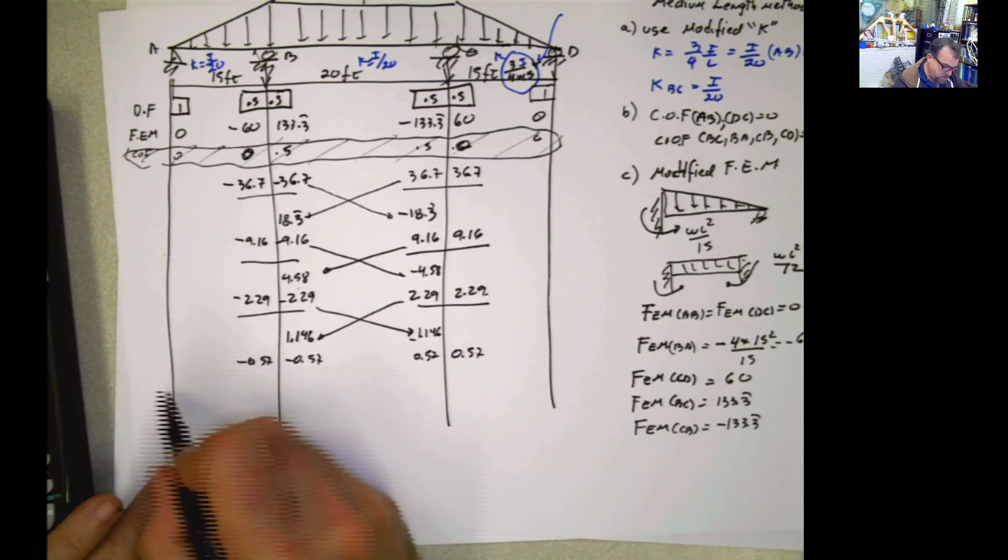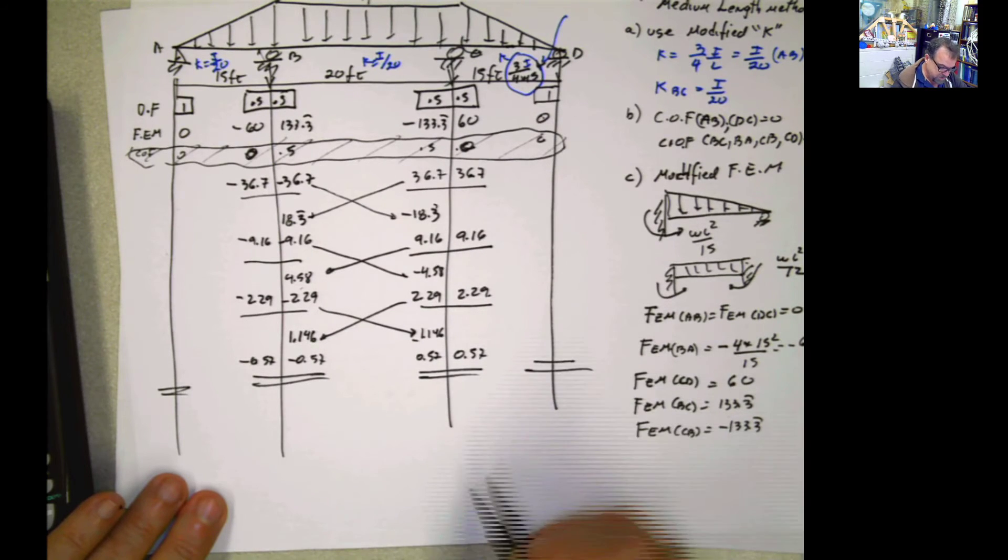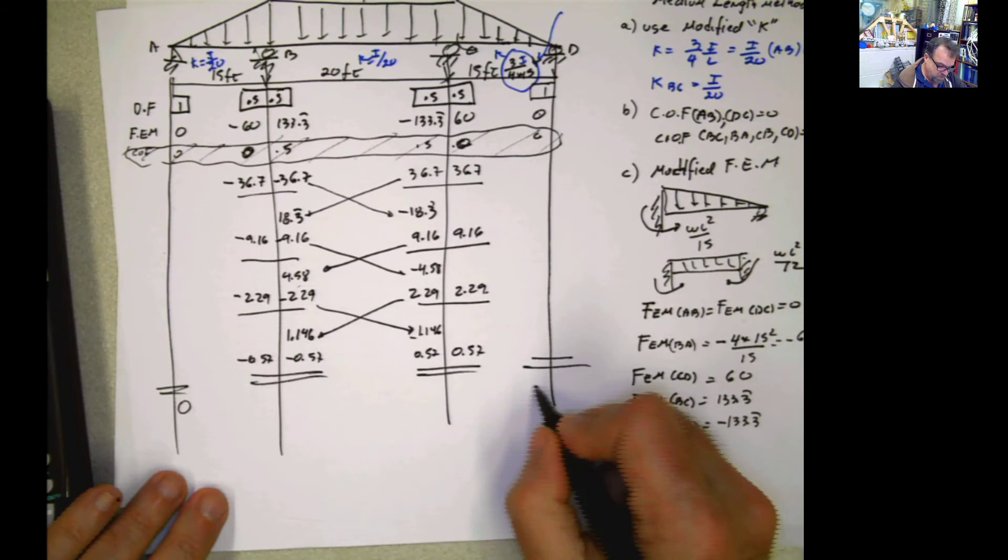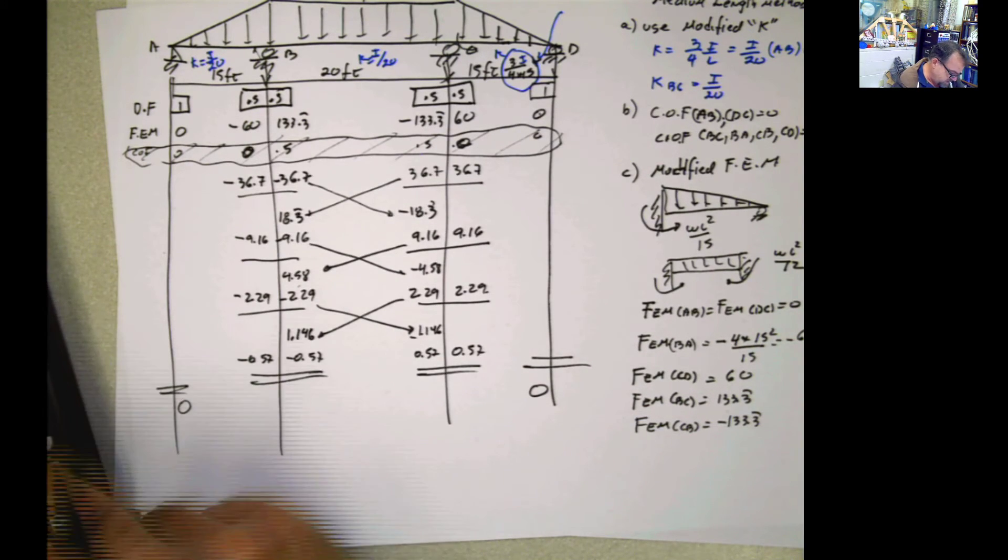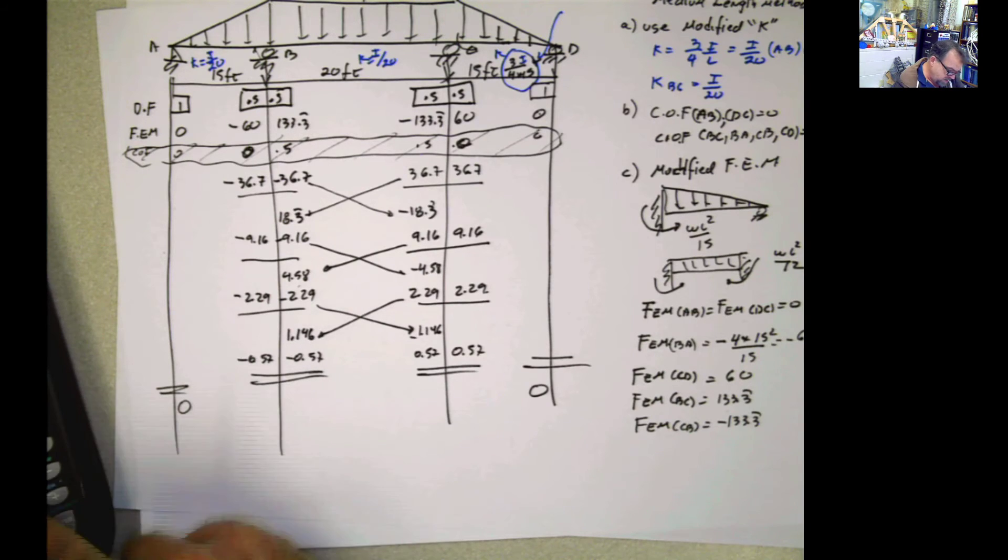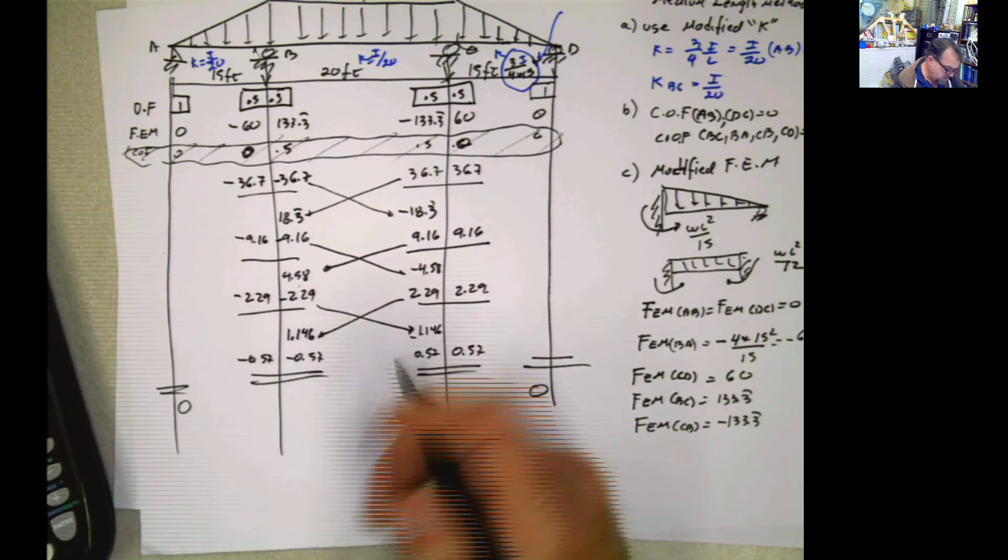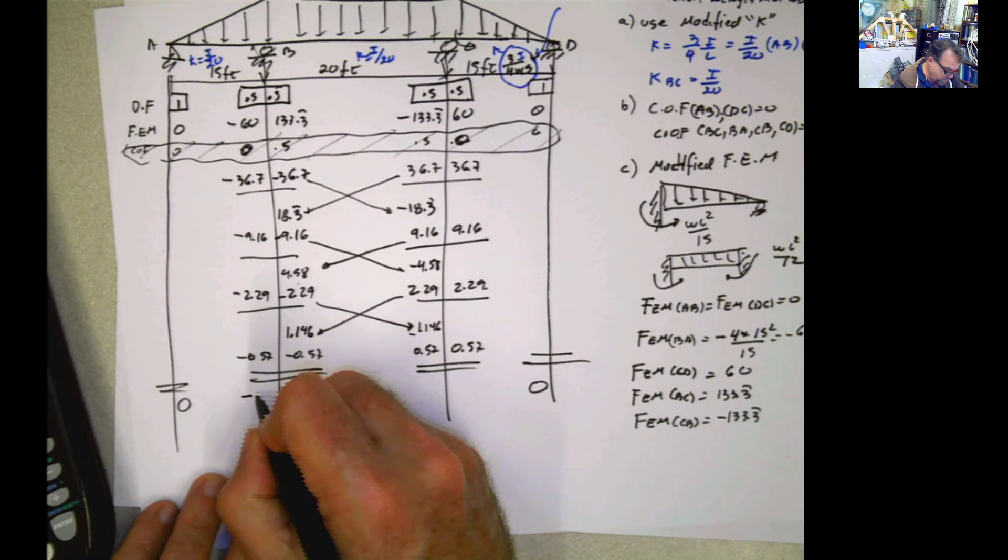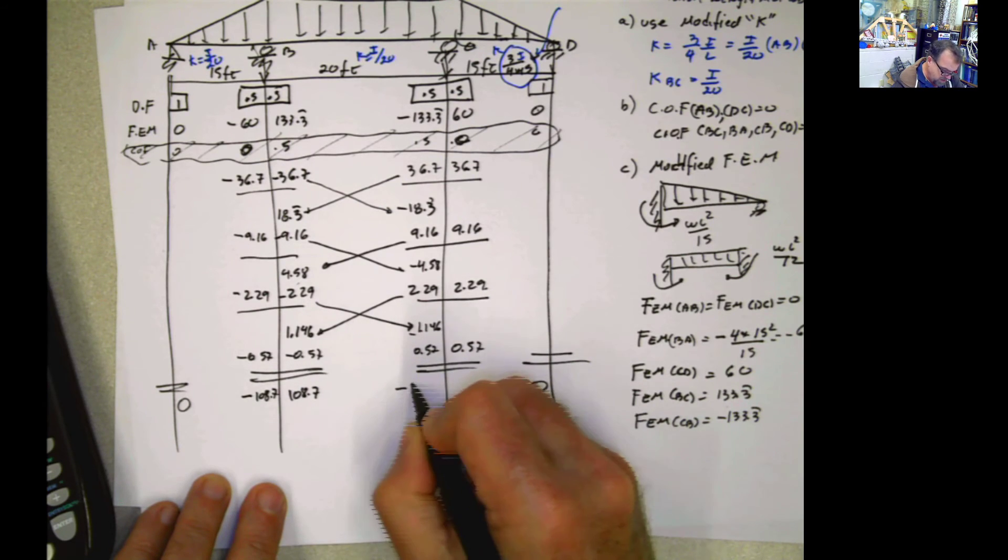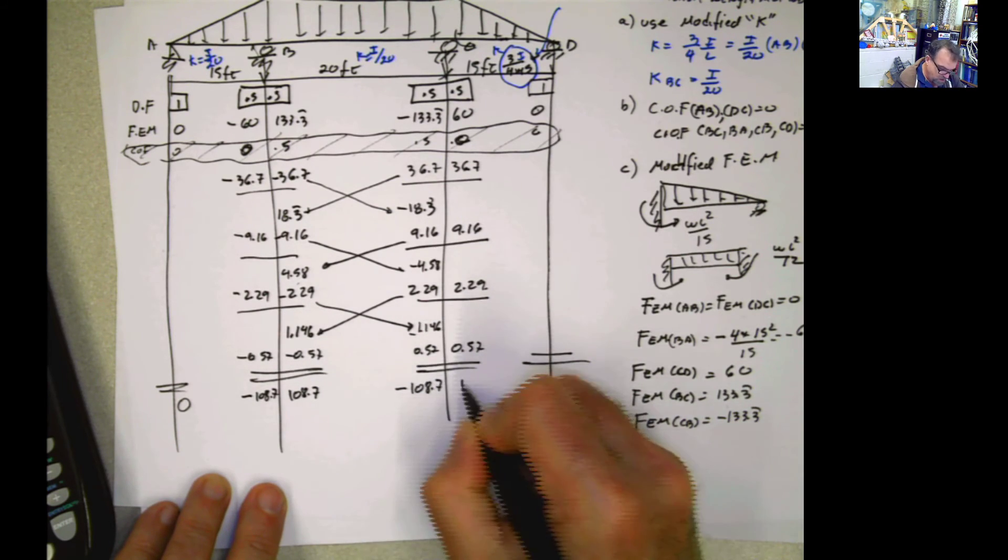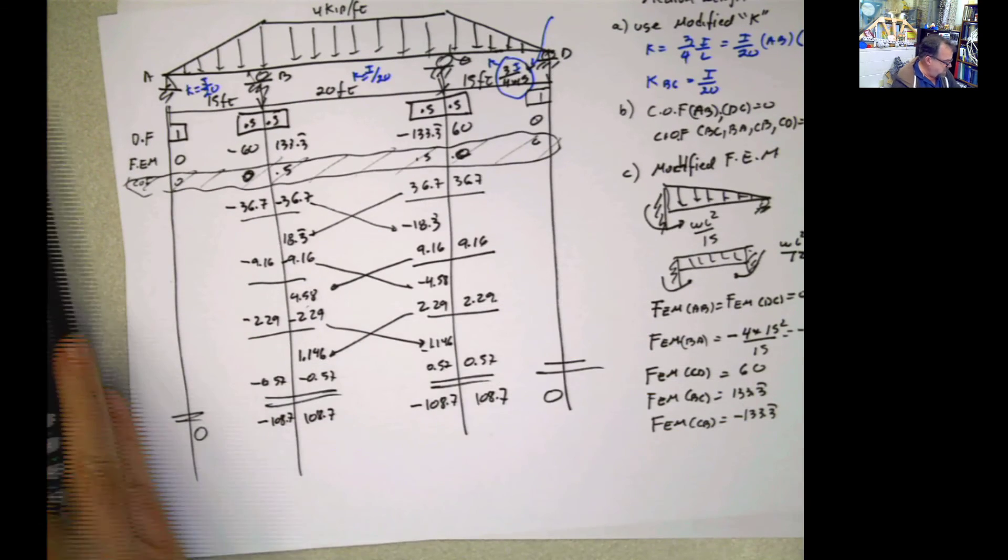Now, when I do the moments at the end, of course, this is 0. Of course, this is 0. And then when I do this part, this is going to be negative 60, minus 36.7, minus 9.16, minus 2.29, minus 0.57. And that's going to be negative 108.7, 108.7, negative 108.7, and 108.7. There you go.